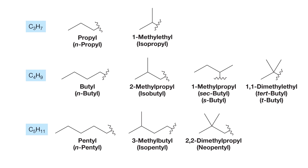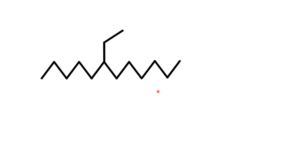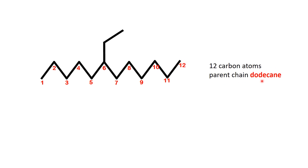Now that we've defined complex substituents, let's move on to an example. We'll start by naming a simple substituent and then modify it to create a more complex one, adding a layer of challenge. When examining this molecule, the first step in naming it is to identify the parent chain. Here, the longest continuous chain is easy to identify — it consists of 12 carbon atoms, making the parent chain dodecane.